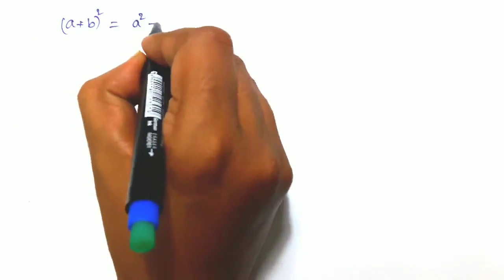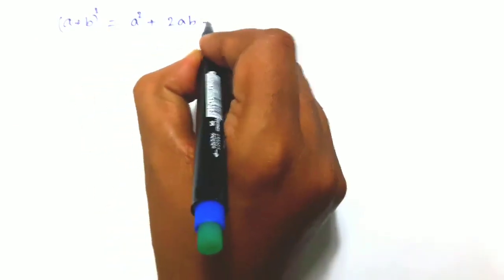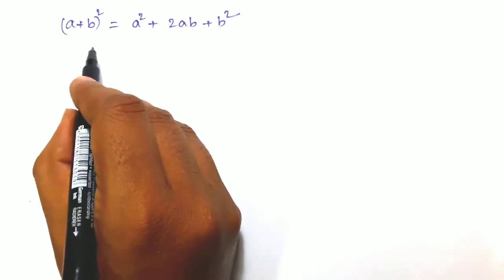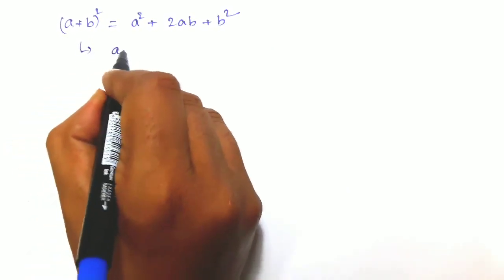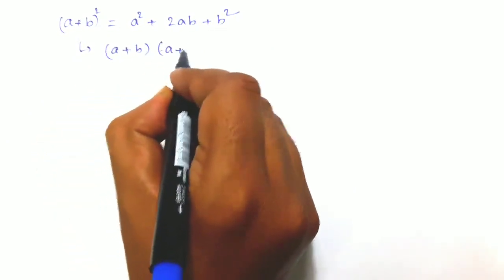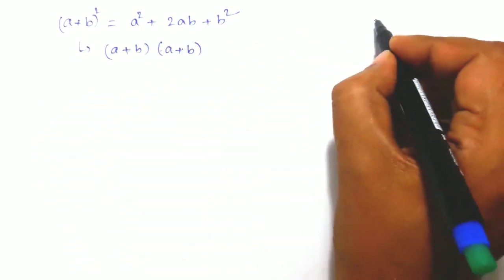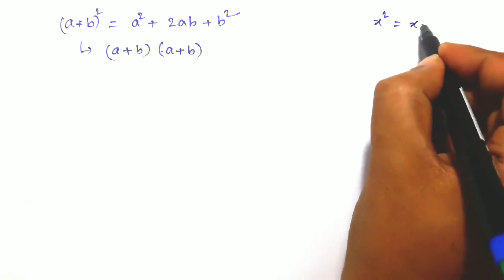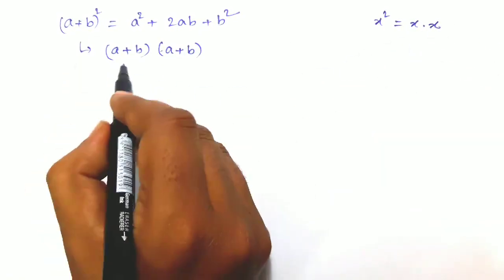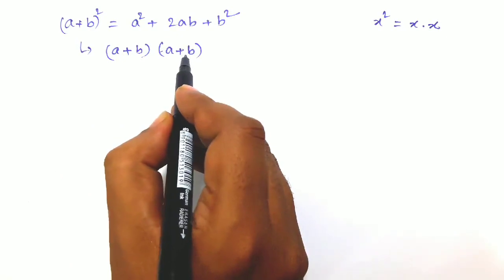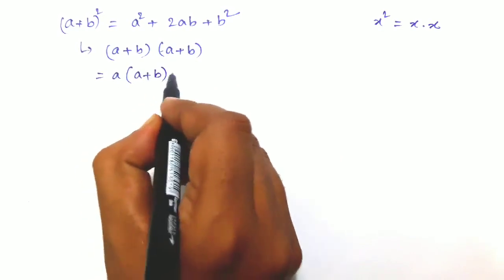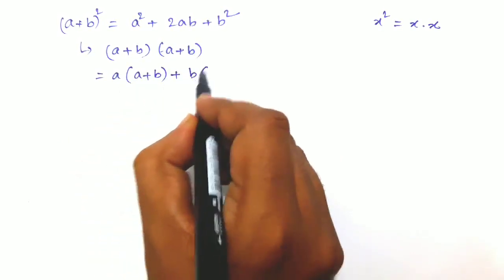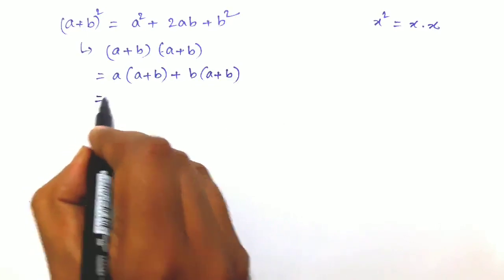Our first formula is (a + b) whole square. The formula is a² + 2ab + b². It comes with the help of the distributive property. We write (a + b)² as (a + b) into (a + b), using the index rule that x² = x × x. Then we break it as a(a + b) + b(a + b), which is the distributive property.